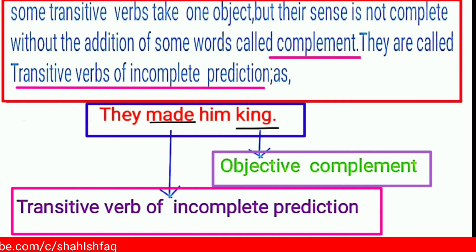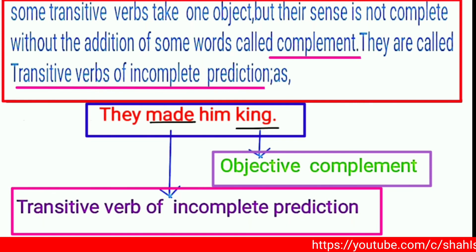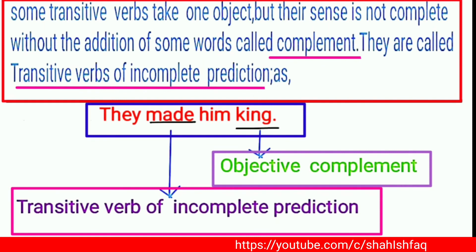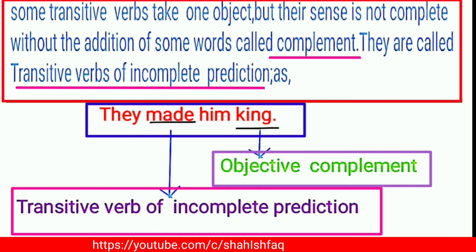So we need another word — 'king.' In the sentence 'They made him king,' the word 'king' completes the sentence and makes it 100% meaningful. 'King' is called an objective complement. It follows the object 'him' and completes the sense. So 'made' is a transitive verb of incomplete predication, and 'king' is the objective complement.